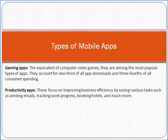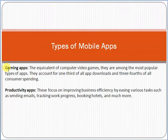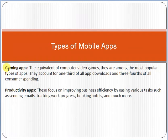There are multiple types of mobile applications available nowadays. First and most important are gaming apps — for example PUBG and Among Us. Gaming apps are the most widely used category of mobile apps in the world today.